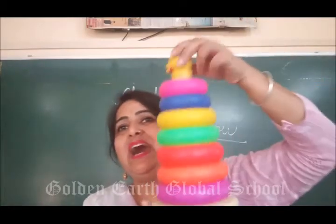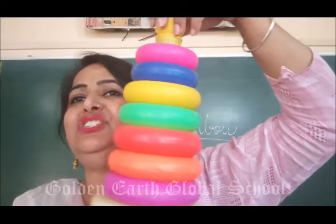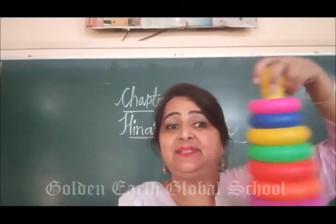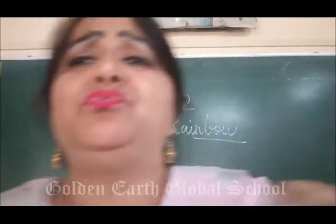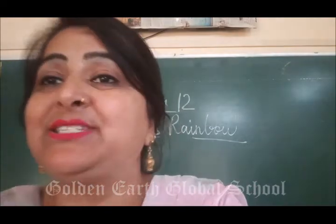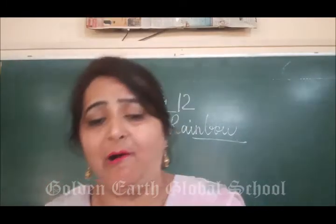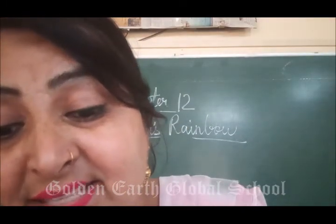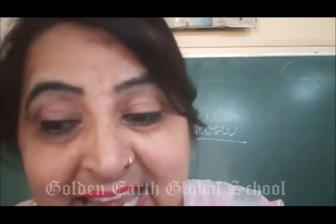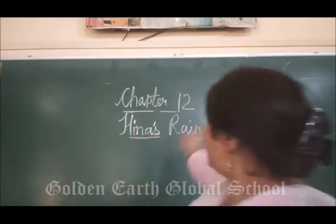If I show you this — here also you can see green, red, orange, yellow. A rainbow looks very beautiful, children. It is formed in the sky when there is rain, then a rainbow is formed. So in the story Hina's Rainbow, here we can see a girl. Her name is Hina — because it is Hina's rainbow.